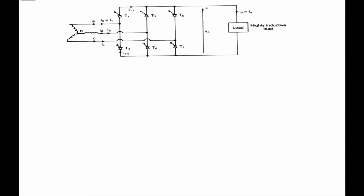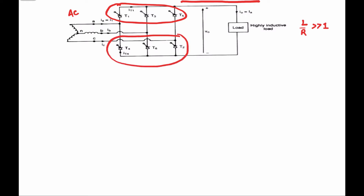Bismillahirrahmanirrahim. In this video we will discuss about a three-phase full converter. This is basically a rectifier circuit — you provide AC supply and get DC output. We will consider a highly inductive load, meaning L/R is quite high. In the previous video we discussed the semi-controlled converter, where high-side switches are thyristors and low-side switches are diodes. But in the full converter, both high-side and low-side switches are thyristors.